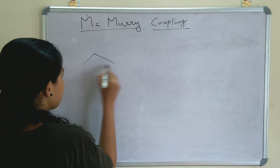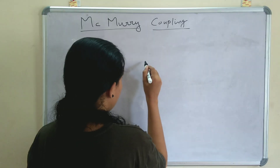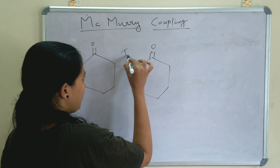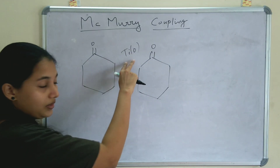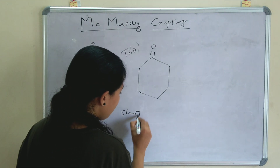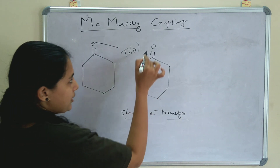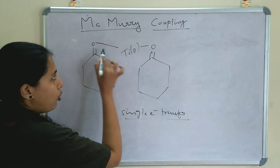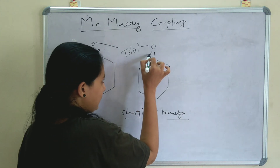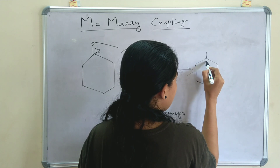First I am going to take cyclohexanone. In McMurry coupling we need two ketones, so let's take two ketones. Now we are adding the low-valent titanium — titanium chloride — where titanium is in the zero oxidation state. What will happen? A single electron transfer takes place, meaning the electrons of the C=O bond are shifted and a radical anion form is generated.